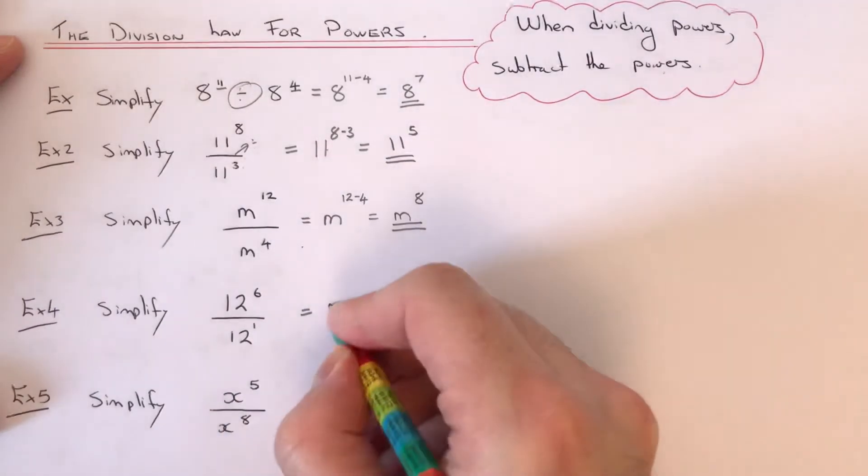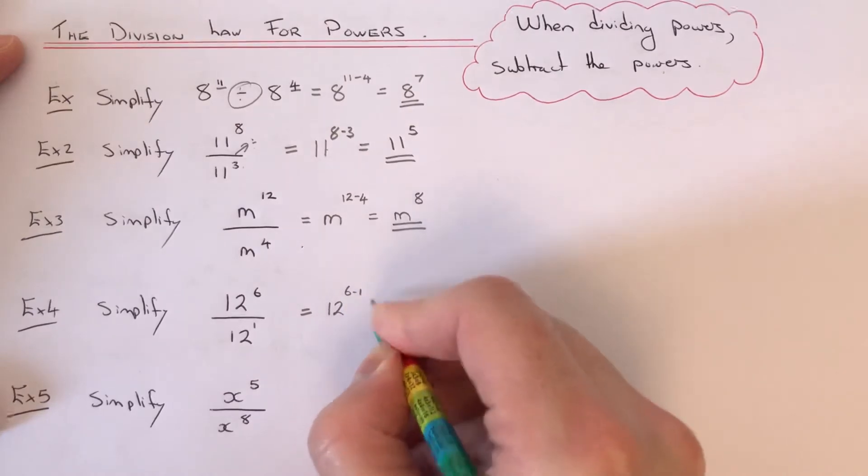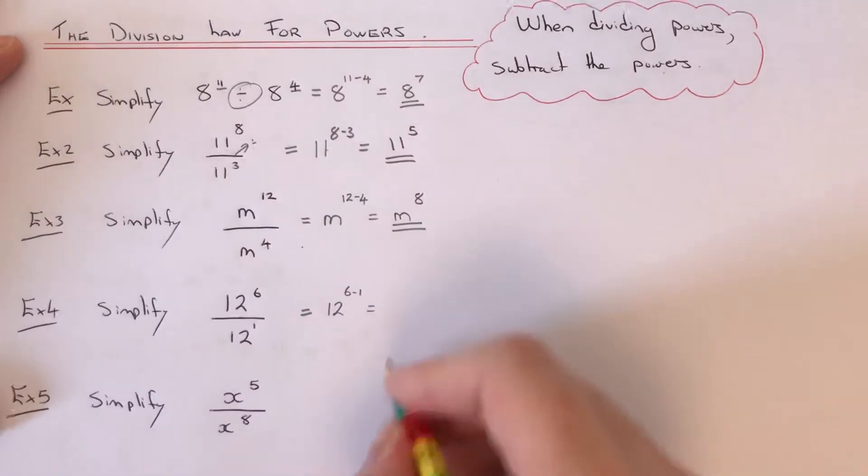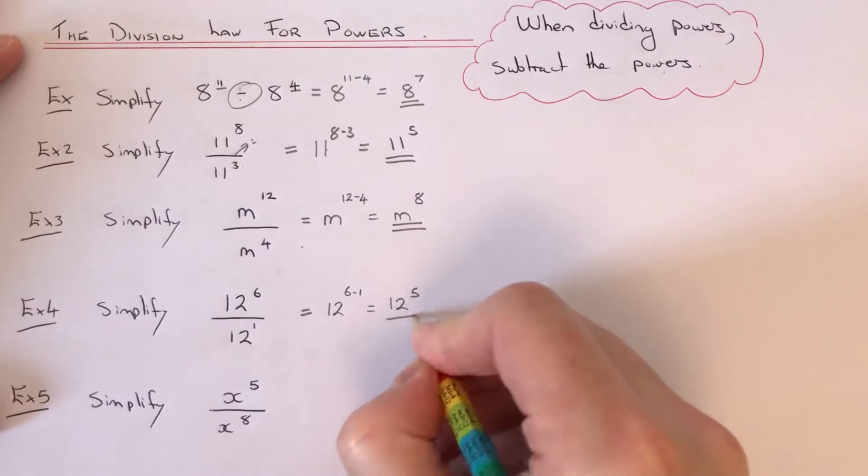So we have to do 12 to the power of 6 take away 1, which gives us 12 to the power of 5.